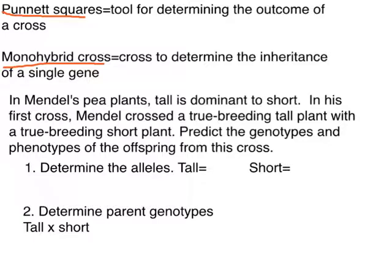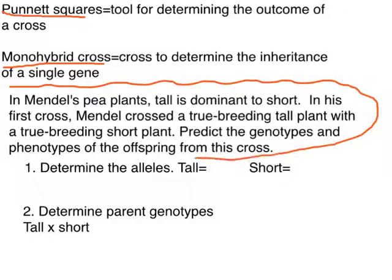So here is our genetics problem right here, and we're going to use the information in this problem to solve it. In Mendel's pea plants, tall is dominant to short. In his first cross, Mendel crossed a true breeding tall plant with a true breeding short plant. Predict the genotypes and phenotypes of the offspring from this cross. So this is typical of a genetics problem, they're all worded like this.